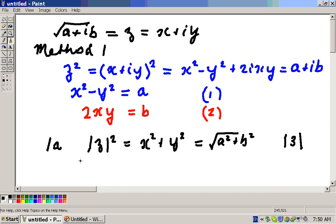Well, the way we can solve these equations, or start to solve them, is to note that if we add equations 1 and 3, then Y squared will drop out, so we will get an equation for X. So we add those two equations, and we'll get 2X squared is equal to A plus the square root of A squared plus B squared.